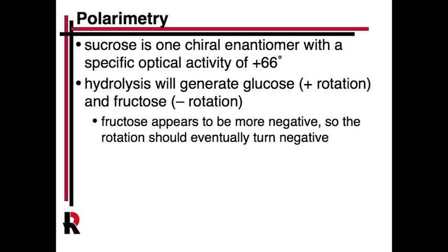Sucrose is a chiral compound. It's enantiomerically pure and has a specific rotation of about +66. We may not get that high because we'll use a different concentration, but it has a positive rotation. When you hydrolyze it, you get two chirally active products — one with a positive rotation and one with a negative rotation. Overall, the net change should be negative, so you'll see the rotation go from positive to negative. Once it's totally hydrolyzed, you should have a negative number.